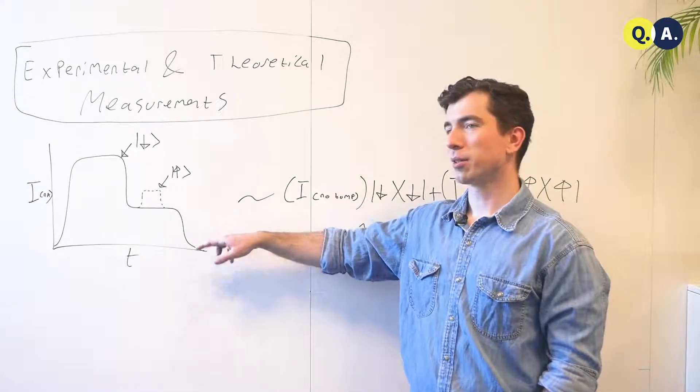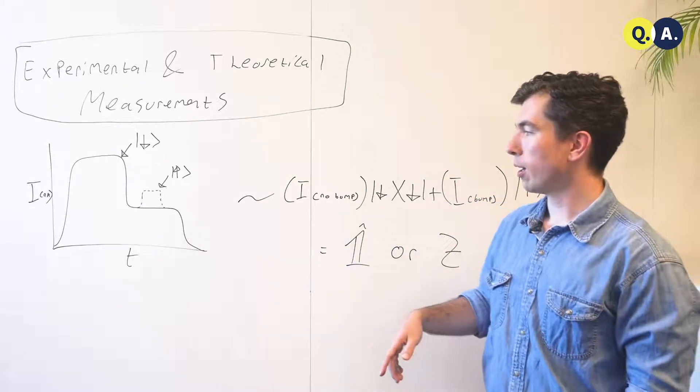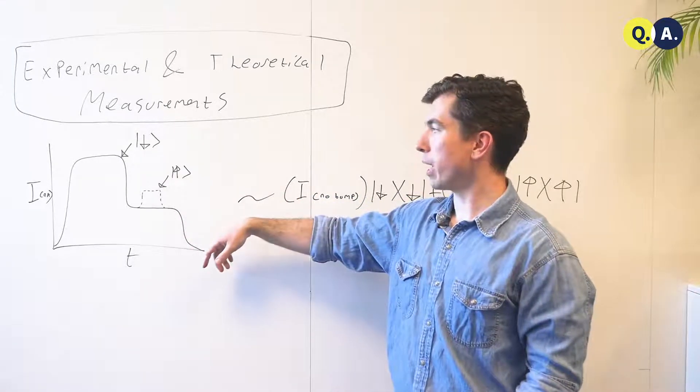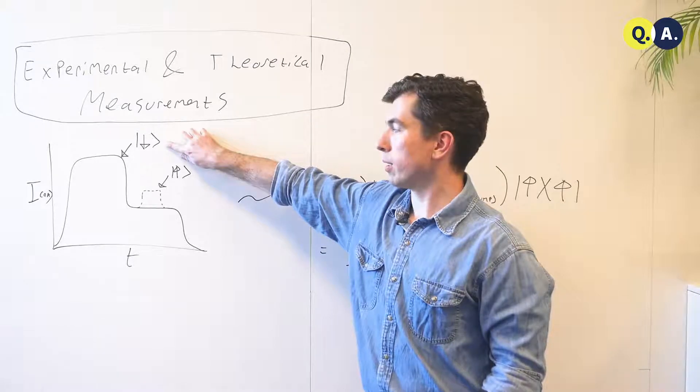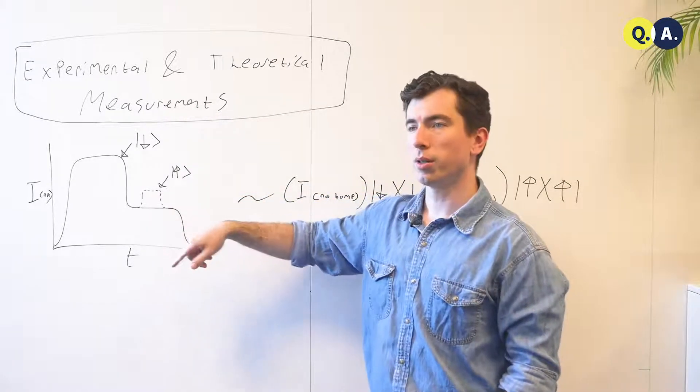So you may have seen already a picture like this one. My apologies to my experimental friends if it's not exactly the same. But in the laboratory, you can measure some currents in nanoamperes. And if there's a spin in the down state pointing parallel to the field, there will be no bump in the current.